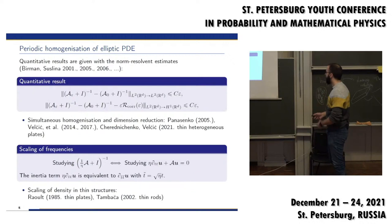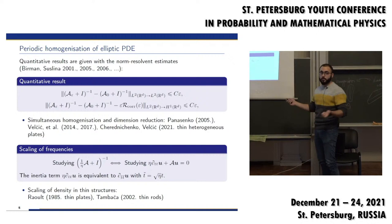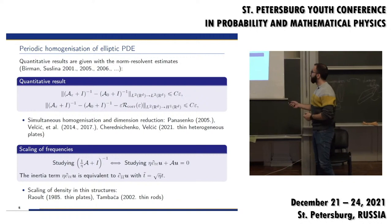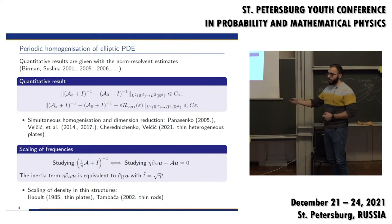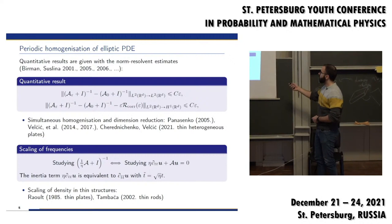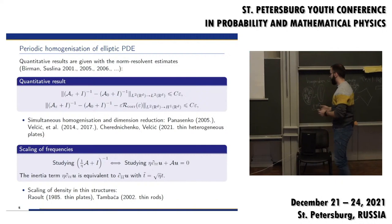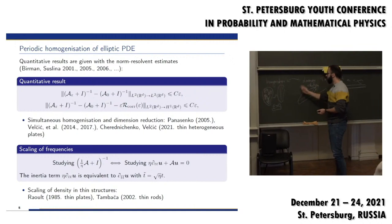To answer these questions you compute estimates of the resolvent operator in the operator norm. Birman and Suslina have done a lot in this direction. For example, the estimate in the L2-to-L2 operator norm is of order epsilon. The estimate in the L2-to-H1 operator norm is also of order epsilon, but you have to subtract a corrector operator — the so-called standard interior homogenization corrector. We will show this type of estimate for the situation of simultaneous homogenization and dimension reduction in elasticity.